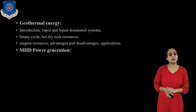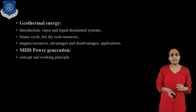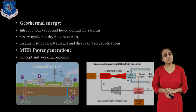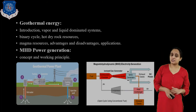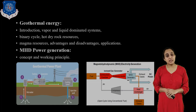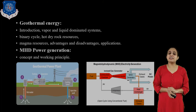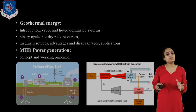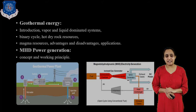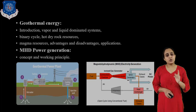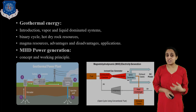The other topic is MHD power generation. MHD means magnetohydrodynamics. In a thermal power plant, the energy of steam is converted into mechanical energy and then into electrical energy. In MHD, fluid energy is directly converted into electrical energy, and it is very efficient compared to a simple thermal power plant. As you see in this diagram, there are two diagrams — one for geothermal energy and another for the MHD electric generator. By all these means, we can generate electricity.